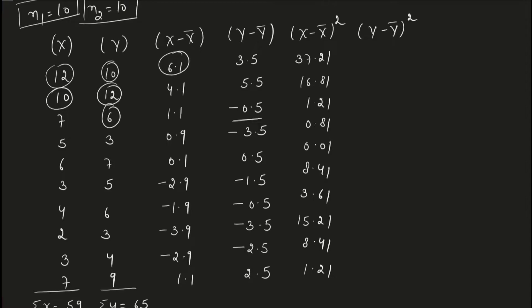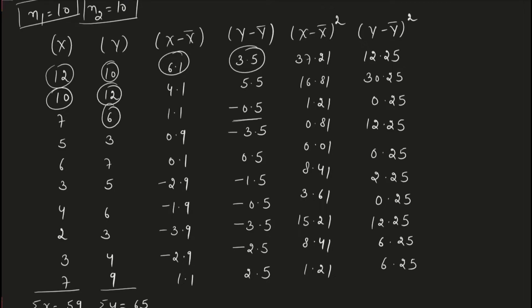So we've written down x minus x̄ whole squared. The same goes for y minus ȳ. For the y minus ȳ column, you just need to square those values. So 3.5 squared gives 12.25, and so on for the entire column. That gives us the x minus x̄ whole squared column and the y minus ȳ whole squared column.